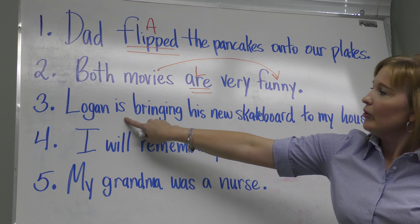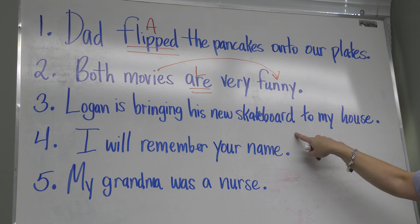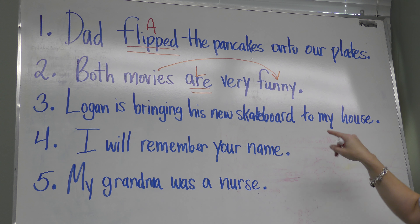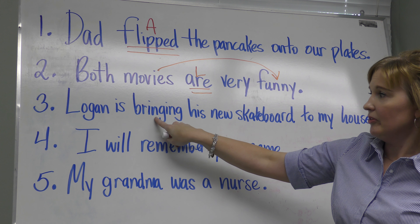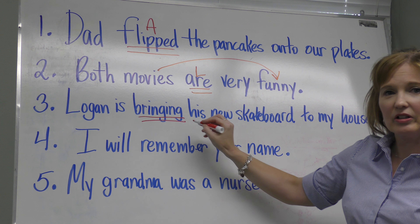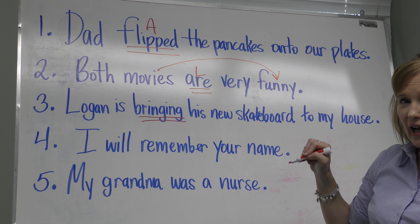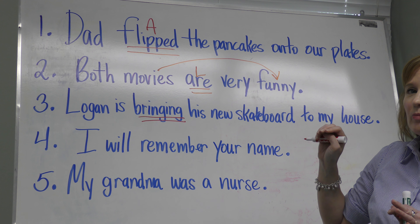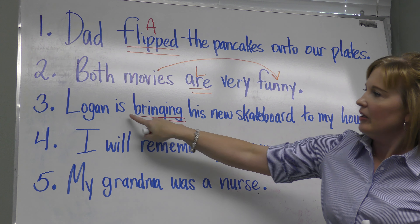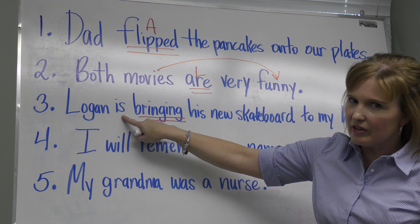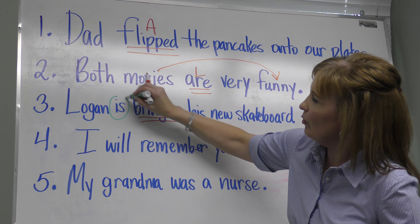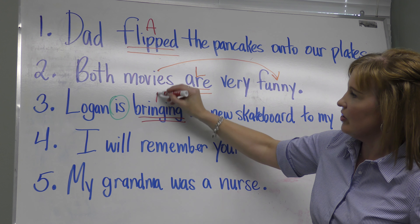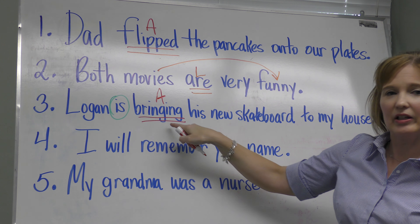Third sentence: Logan is bringing his new skateboard to my house. Let's look for an action. Is Logan doing anything? I think so — he's bringing. That's an action. Then you look to see if there's anything helping it out — anything that looks like a verb right in front of it. I see the word 'is,' and again, 'is' and 'are' are the major ones. So that's going to be your helping verb — 'is bringing.' You have your action verb, and 'is' is helping it out.